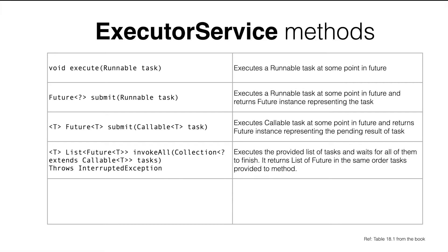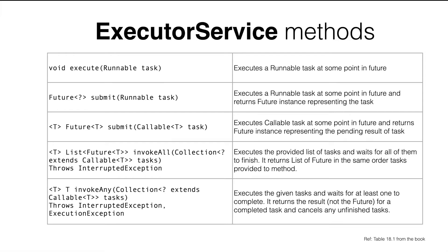The fourth one is invokeAll. This method takes a list of Callable tasks and waits for all of them to finish. This call is a blocking call, meaning the control in the code will not move forward until all tasks are finished. It then returns a list of Future objects in the same order as the input list. The fifth method is invokeAny — it takes a list of Callable tasks, waits for at least one to finish, returns the result of that finished task, and cancels the remaining unfinished tasks.